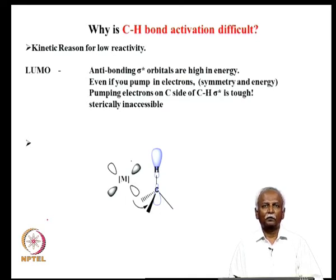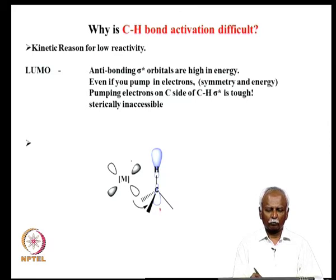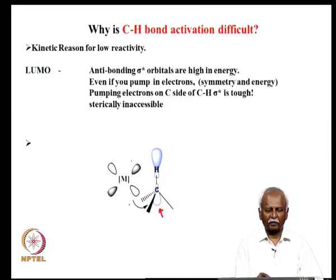But even there, you notice that on the carbon side, there are 3 bonds on the carbon in an SP3 hybridized orbital. These 3 bonds on the carbon are in fact protecting the lobe that is present on the C-H sigma star. So it is theoretically inaccessible — this orbital that we are talking about is not accessible to the metal.